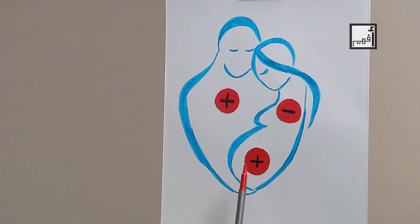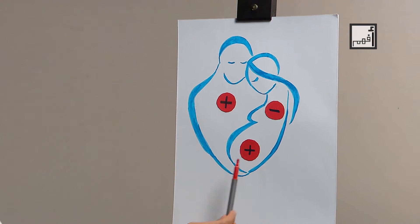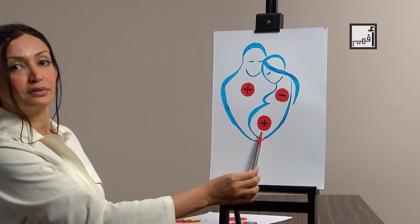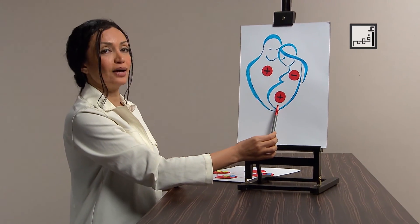If the second baby is rhesus positive, like the first baby, the previously formed antibodies will react against the foreign protein, killing the fetus and causing abortion.